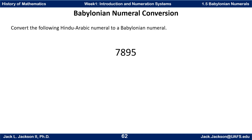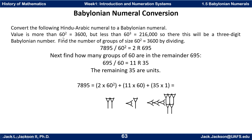The value is more than 60 squared (which is 3,600) but less than 60 cubed (which is 216,000), so we only need three digits: singles, 60s, and 60-squares, but not 60-cubes. First, take the largest group — 60 squared. We divide 7,895 by 3,600 and get 2 remainder 695. So there are two groups of 3,600, leaving 695 remaining, giving us the digit 2 in the third place.